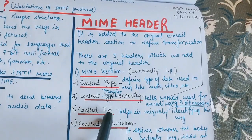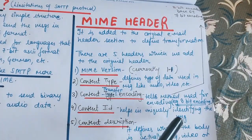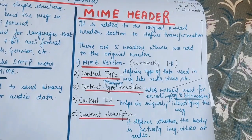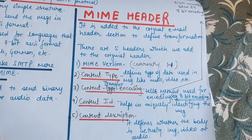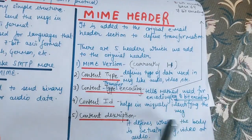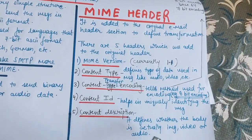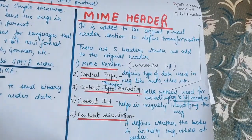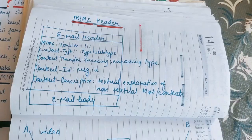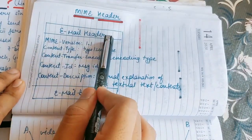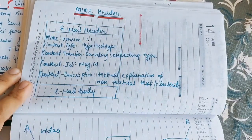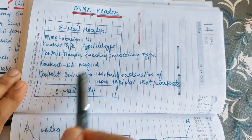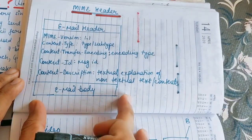Fourth is Content ID — this is a unique identity which helps in identifying the message, similar to a primary key in DBMS which uniquely identifies a record. Fifth is Content Description — it defines whether the body is actually an image, video, or audio. These are the five fields of the MIME header. You should know their names and their functions. In the diagram, we add these five MIME header fields to the existing email header, and we also have the email body — that is the complete MIME header structure.